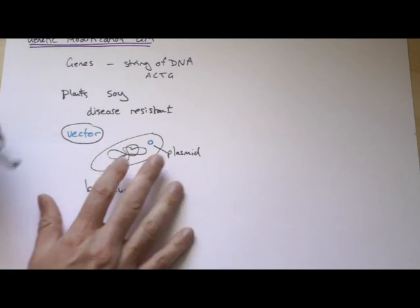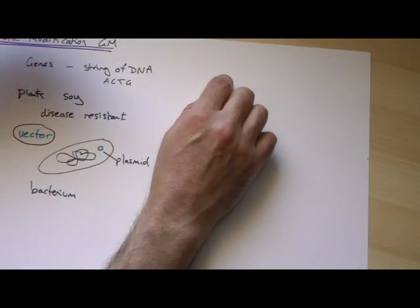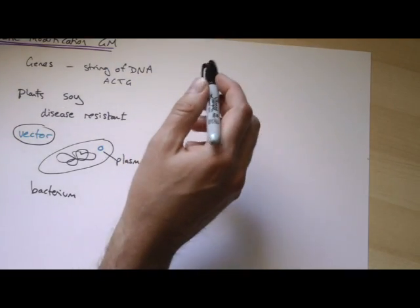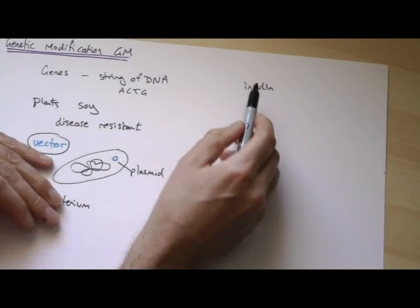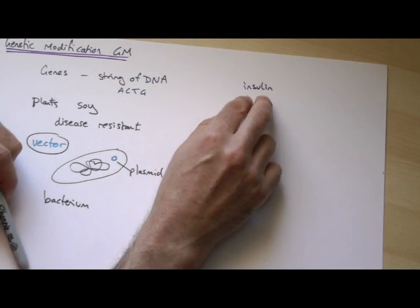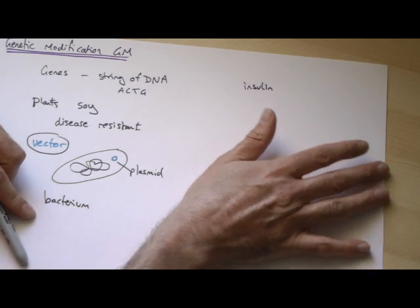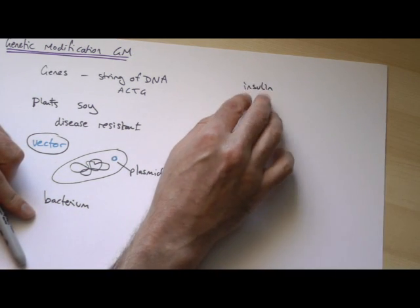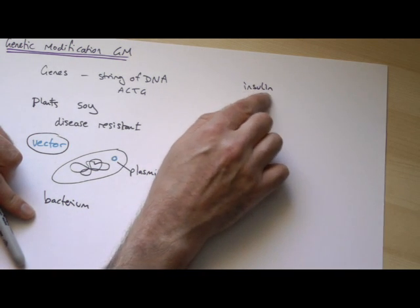And one specific example, they might not give you this on the exam. They might give you something completely different. But the idea is still exactly the same. What you would do is you can use the example of insulin. And insulin is a hormone produced normally in our bodies in the pancreas, which controls blood sugar levels. Someone who's got diabetes or type 1 diabetes would not produce any insulin or wouldn't produce enough insulin.